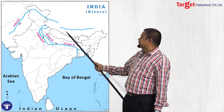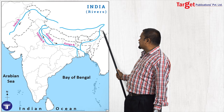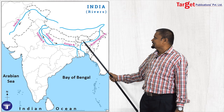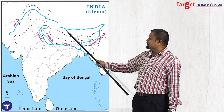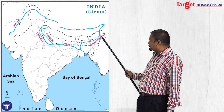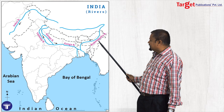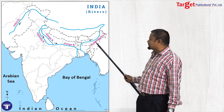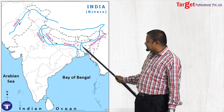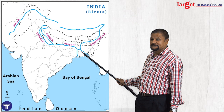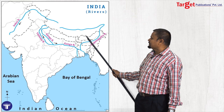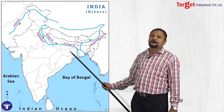The third important river is the Brahmaputra. It is originating in Tibet, flowing towards east, and in Arunachal Pradesh it is entering India. It flows through the entire Assam state, then after the Meghalaya plateau, takes a sharp turn towards south and joins the Ganga river. These are the three important Himalayan rivers.